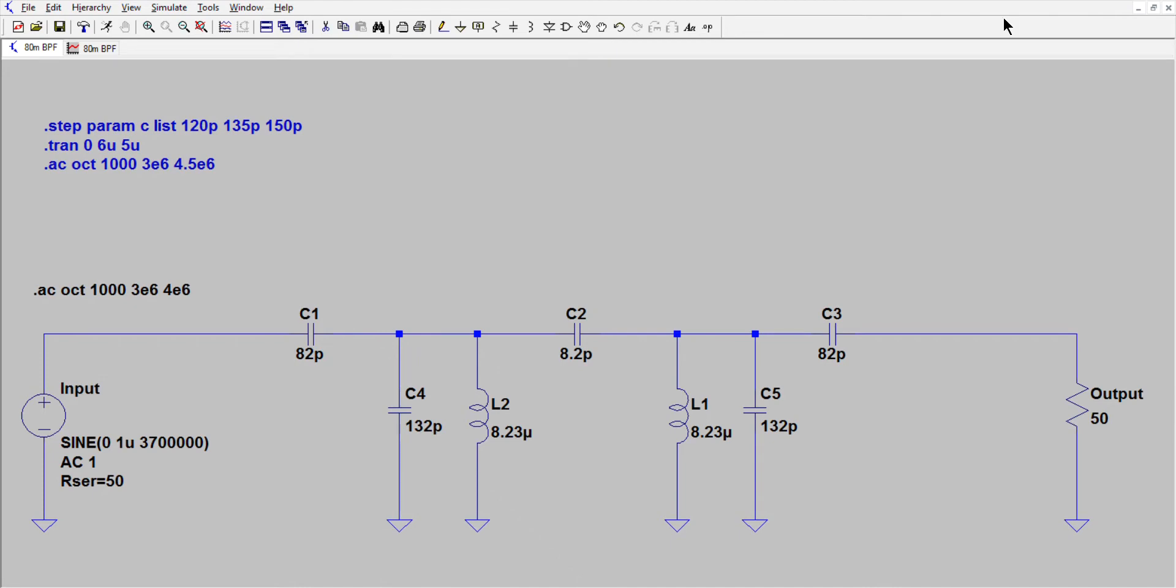Okay, so here we are in LT Spice with the circuit simulated using standard values. So for the two input and output capacitors, just using 82 picofarads. For the coupling capacitor in the middle, 8.2 picofarads. And then for C1 and C2, which are notionally labeled here C4 and C5, the two capacitors in parallel with the inductors using the 132 picofarads. So just using the value that came out of the formula. And I'll talk in a minute about how to do that in practice. And then the two inductors, so 38 turns on a T68-2 should be around 8.23 microhenries.